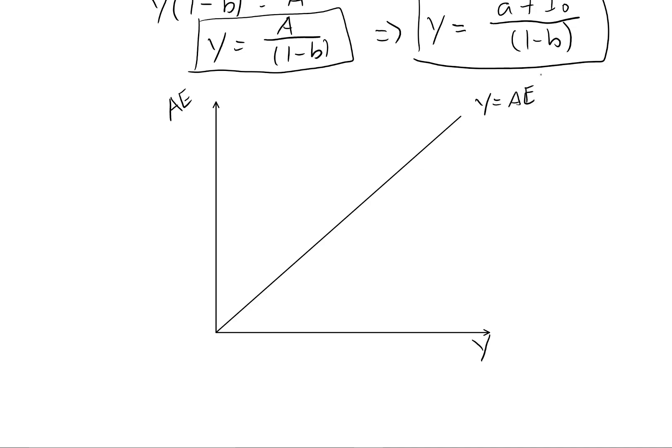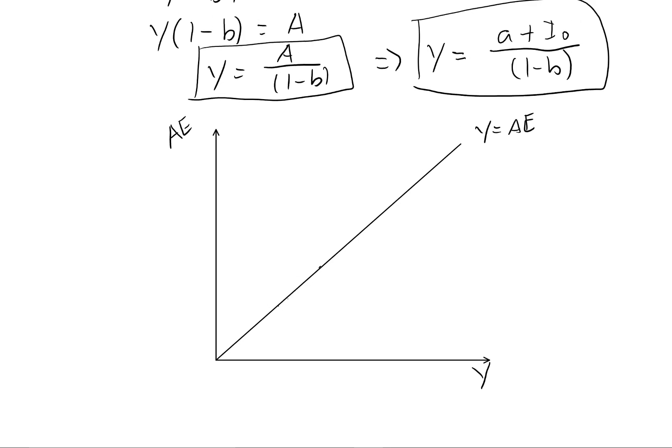So this is our equilibrium condition because at every point along this line, Y equals AE. Then what we need to do is draw our aggregate expenditure function.